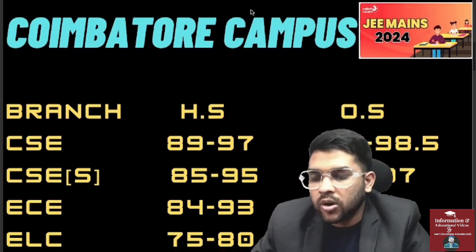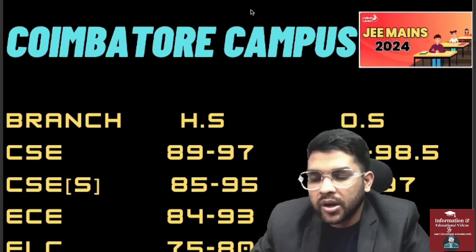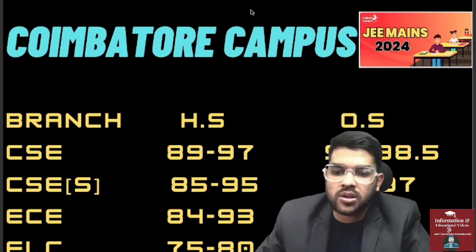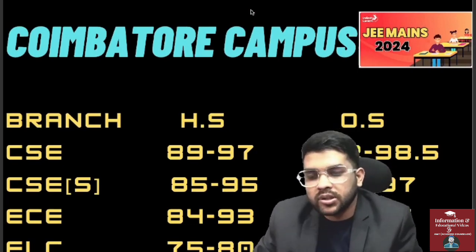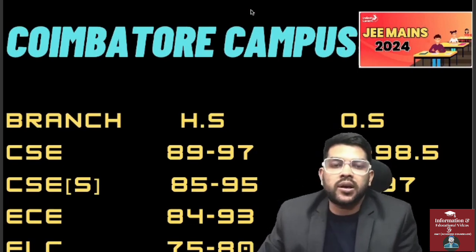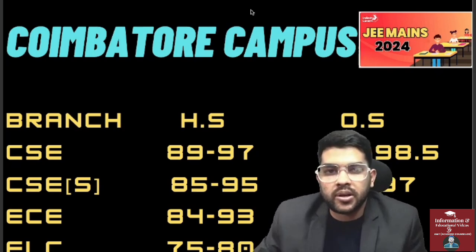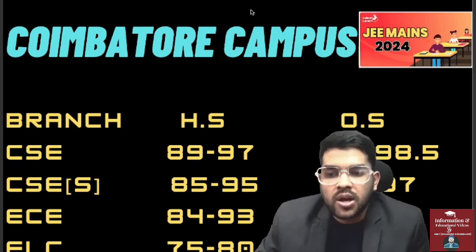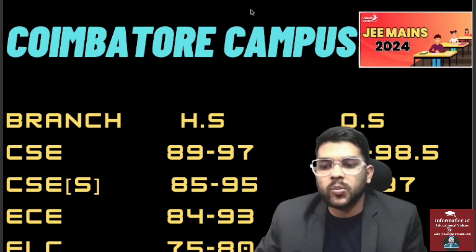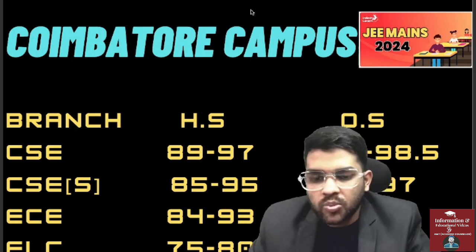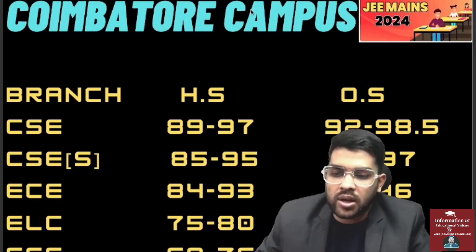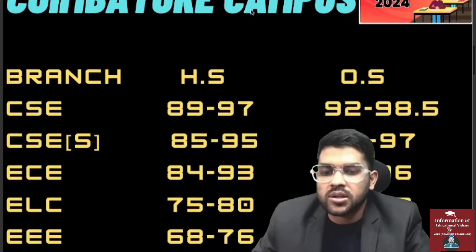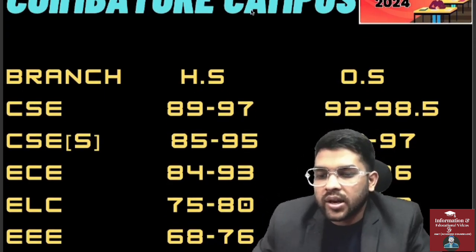For CSE specialization, 85 to 95 percentile for home state and 89 to 97 for other state. Similar to this video, I have already uploaded a video regarding AEEE percentile. Once the AEEE rank is announced I will provide AEEE rank-wise information as well. Please try to subscribe the channel. For EC, 84 to 93 percentile for home state and 87 to 96 for other state.